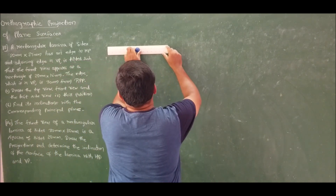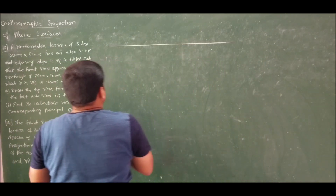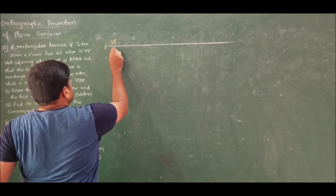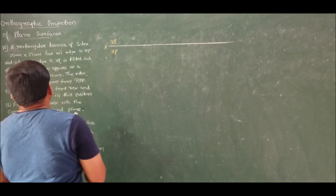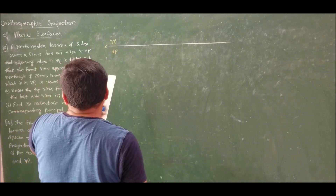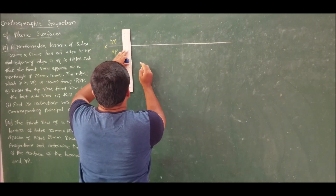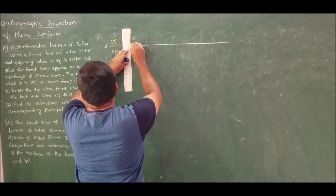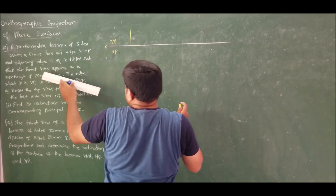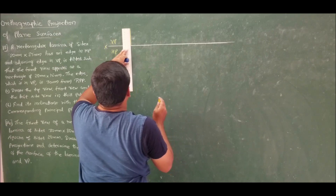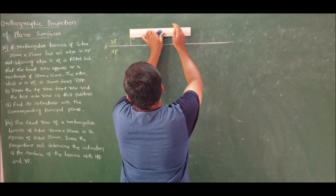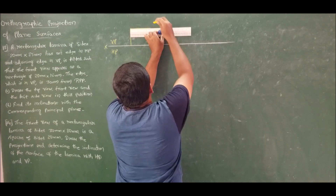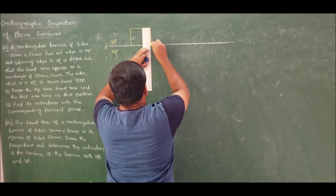First, let us draw the XY line. We have the vertical plane and horizontal plane. We have a rectangular lamina of 20 mm × 25 mm. Draw a rectangle of 20 mm × 25 mm in the front view, because when it is tilted we are seeing the rectangle in the front view itself. So 20 × 25 is drawn.